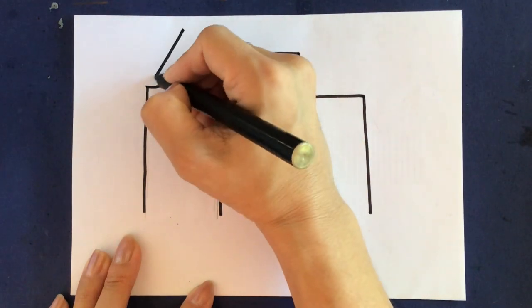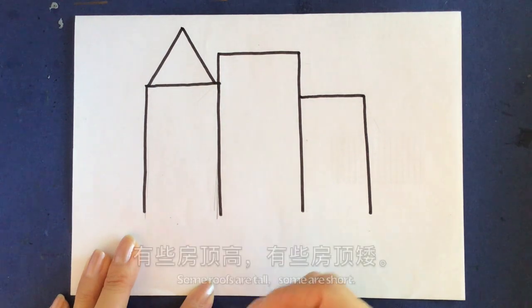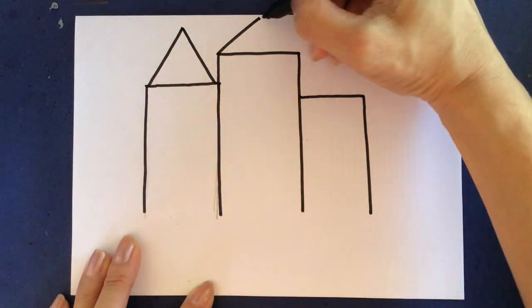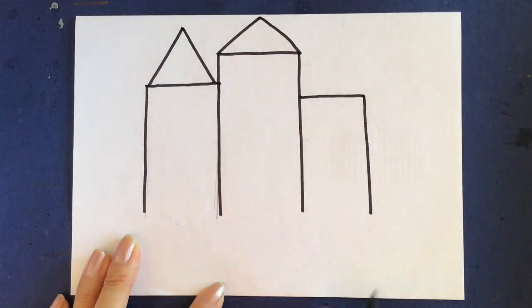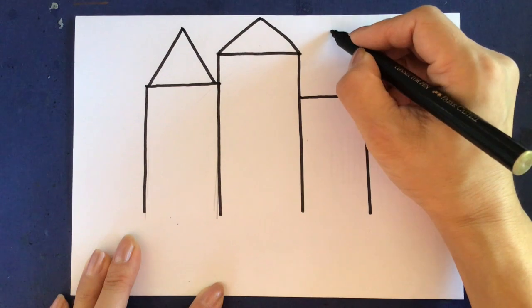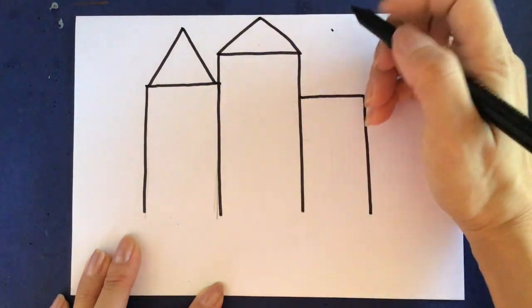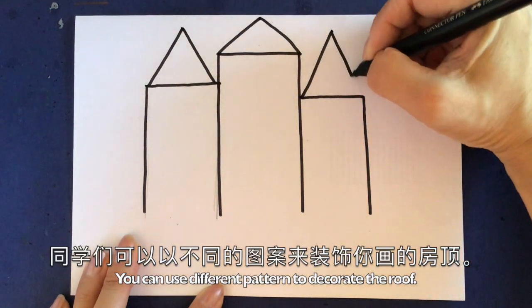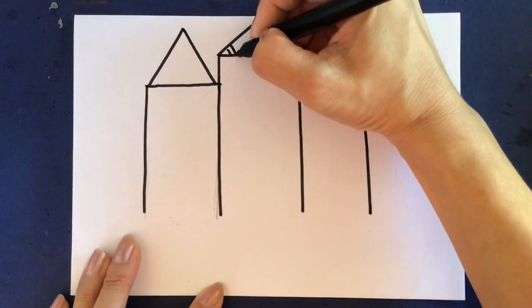现在给每个房子添上三角形的房顶。Now we draw the roof for every building. 有些房顶高,有些房顶矮。